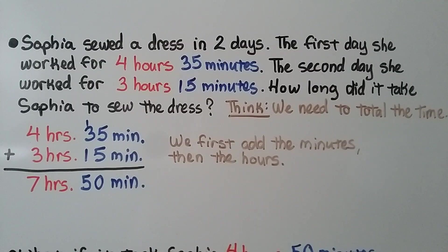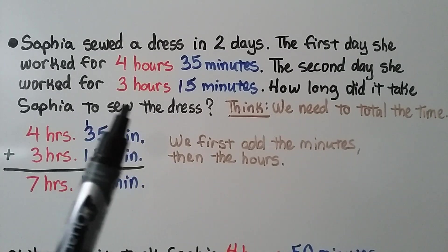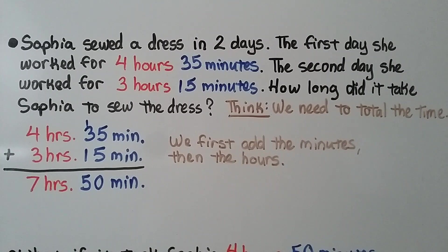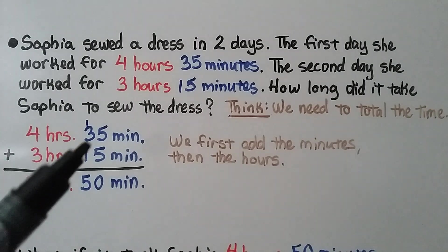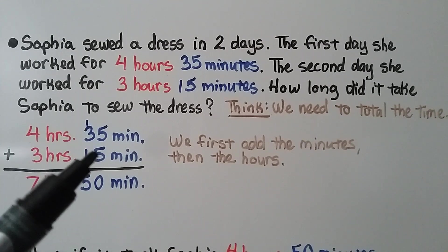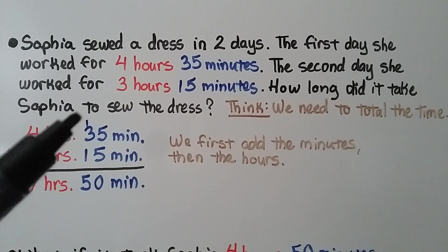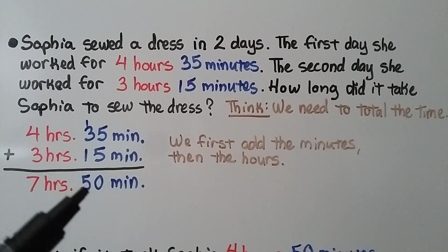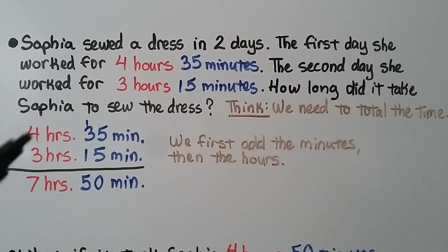Sophia sewed a dress in two days. The first day she worked for four hours thirty-five minutes, and the second day she worked for three hours fifteen minutes. How long did it take Sophia to sew the dress? We add four hours thirty-five minutes plus three hours fifteen minutes. We first add the minutes: five plus five is ten, regroup the one and put the zero down, then one plus three plus one is five — so fifty minutes. Then we add the hours — it's seven hours and fifty minutes for Sophia to sew the dress.